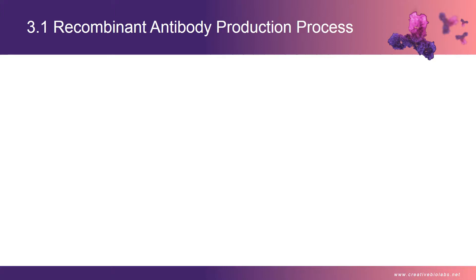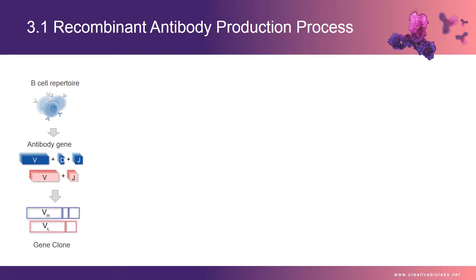How is a recombinant antibody produced? Let me show you the process of recombinant antibody production. As we know, an antibody is composed of two heavy chains (VH) and two light chains (VL). Step 1: variable genes of the heavy chain and light chain antibody should be cloned by PCR using designed primers.